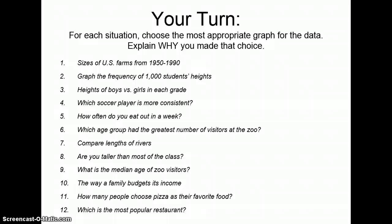Now it's your turn. Look back at the definitions you wrote and your examples. For each situation listed below, choose the most appropriate graph for the data and explain why you made that choice. Now, for this video, your summary is your table where you listed each graph, its definition, and your example. The work section would be numbers 1 through 12. You do not need to rewrite the situations or questions, but you do need to tell which graph you would choose and explain why you made that choice.